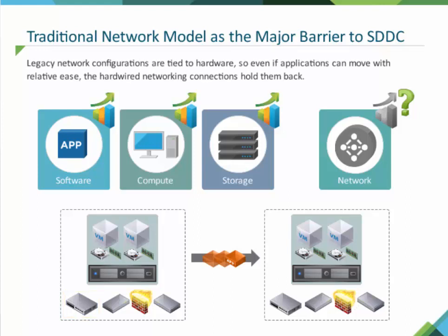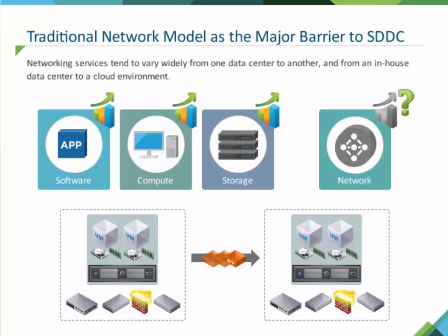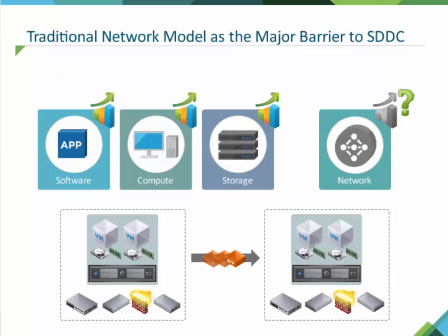Even if applications can move with relative ease, the hardwired networking connections hold them back. To make things even more challenging, networking services tend to vary widely from one data center to another, and from an in-house data center to a cloud environment. That means you end up doing a lot of customization to ensure your apps are going to work in different network environments — a major barrier to app mobility, and another huge argument for using virtualization to transform the network.